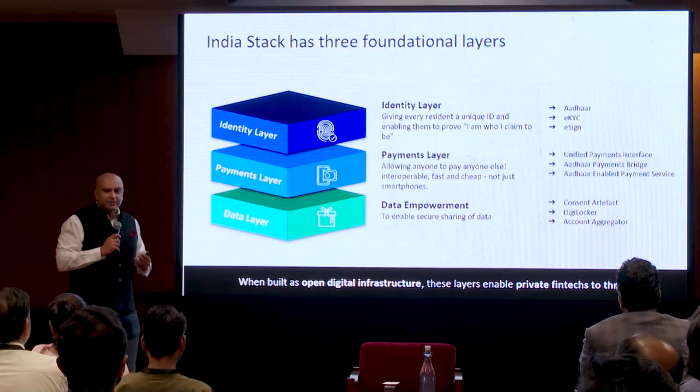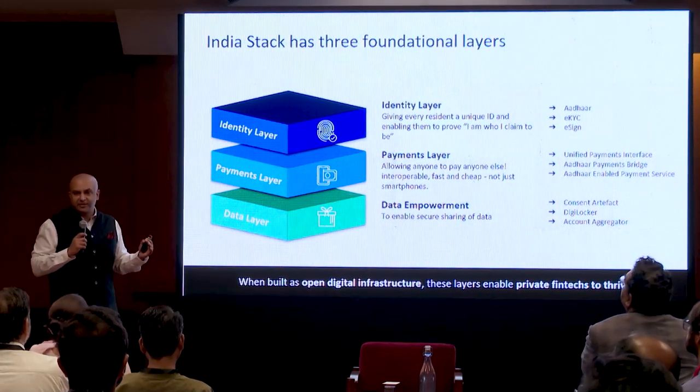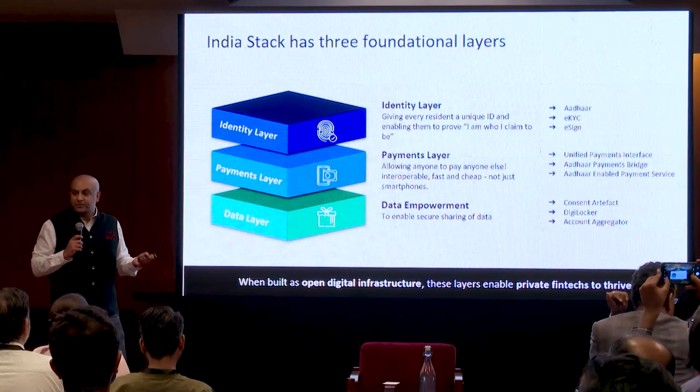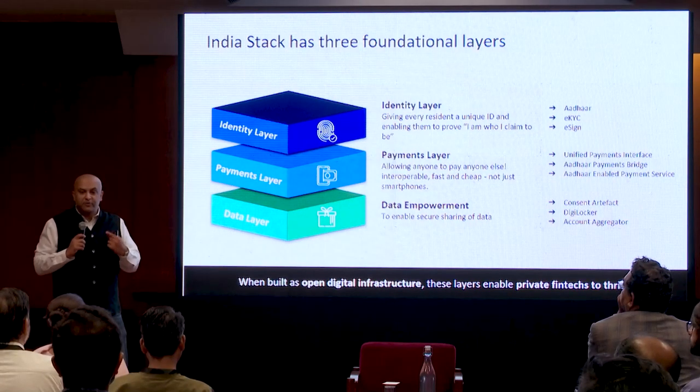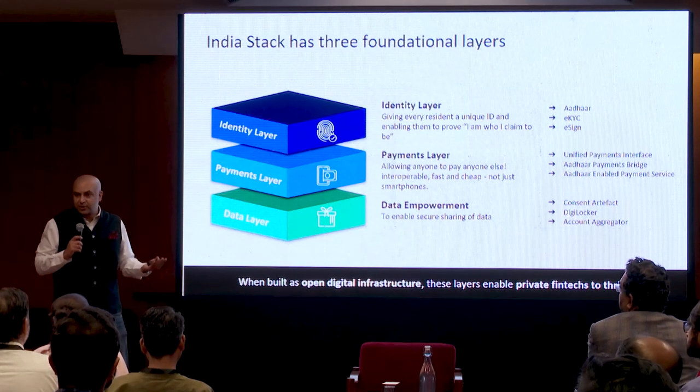The next chapter is OCEN — account aggregator is live. Just to take a step back: Aadhaar is how I can identify the person, UPI is how I can transfer money. If I give a 500-rupee intraday loan and it costs 5 rupees to send the money each way, 10 rupees is just the cost of sending money — what will the lender make on a 9-hour loan? Nothing. UPI solves for that by being zero MDR. Yes, it's not profitable for those who run it, but we are solving for all of India, not just people in this room.